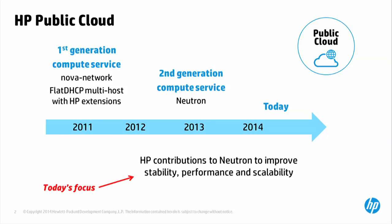I want to start with a little background on HP public cloud. We started about three years ago and made a strategic decision to go with OpenStack for our public cloud deployment. At that time we didn't have any options, so we went with Nova Network for our first-gen compute service — this was in the Diablo timeframe. Around August, the multi-host feature showed up in Nova and we adopted it, adding HP extensions like running the same gateway IP and MAC across all compute servers.